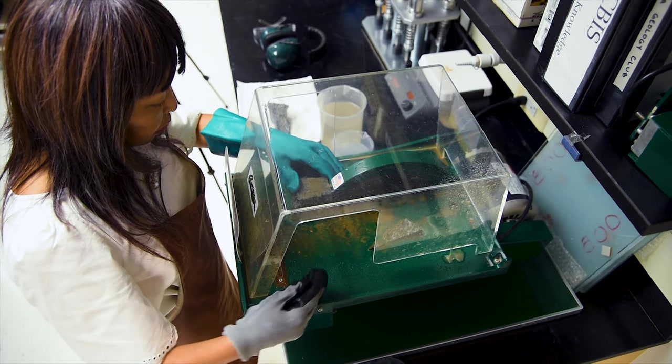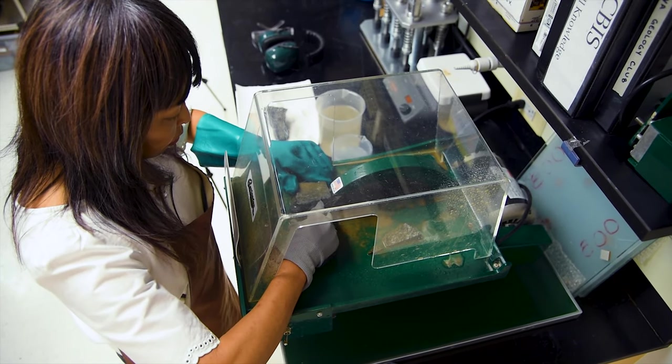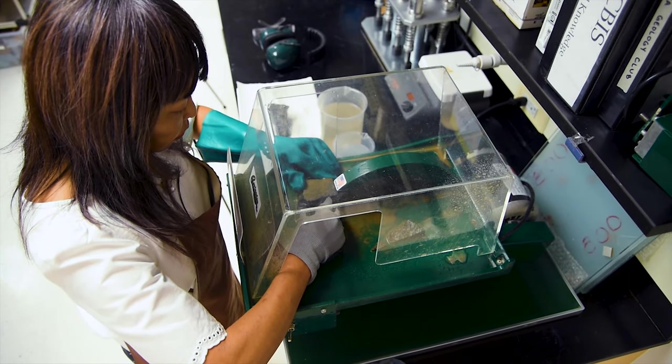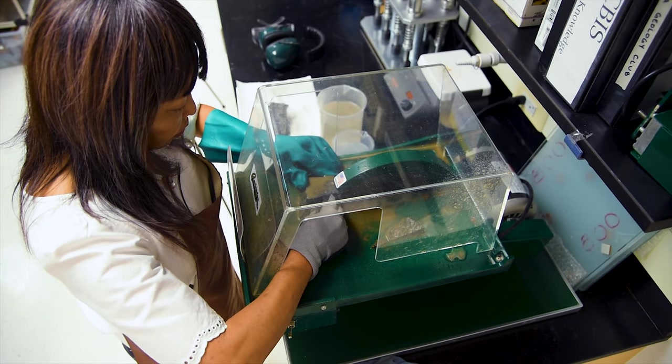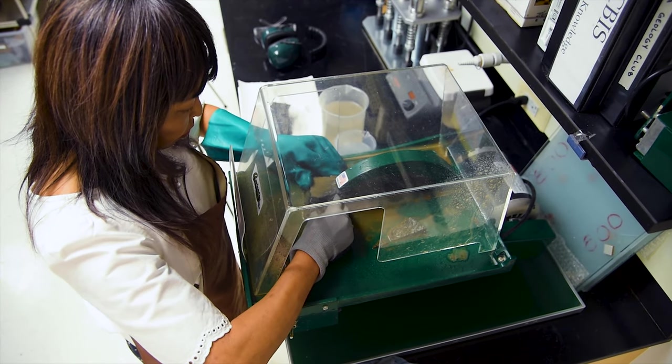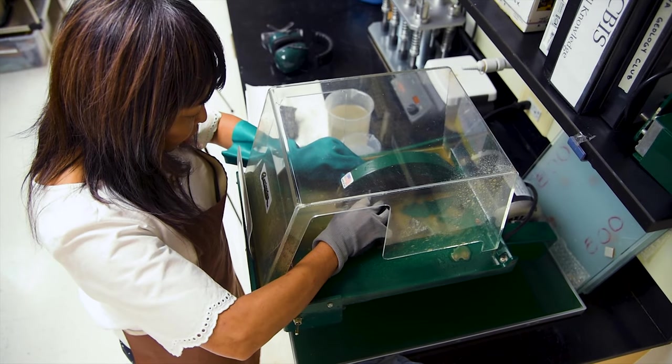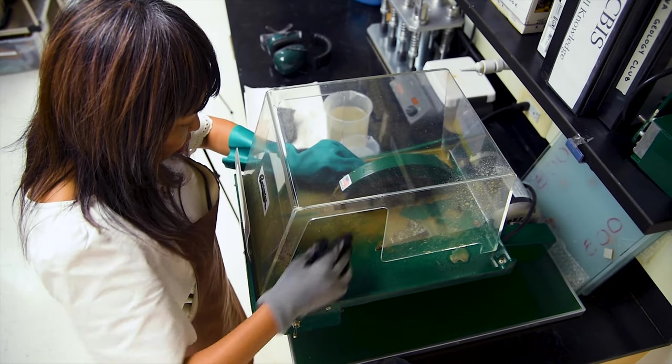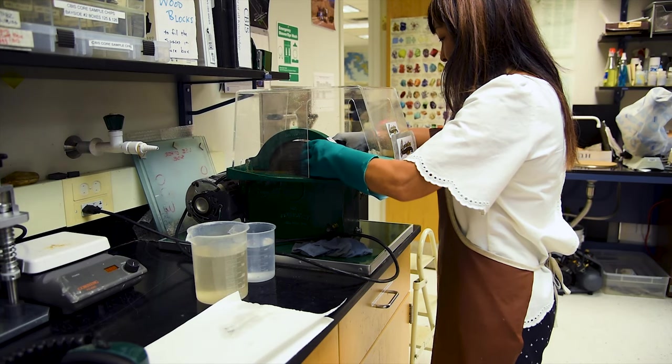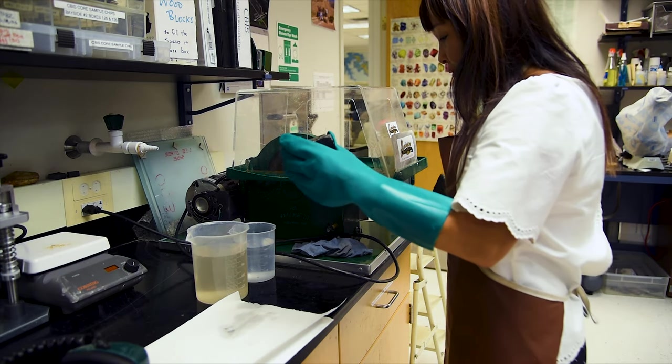Going back to the loaf of bread analogy, Sarah will now cut off a slice from the sample that is around a half inch to inch thick. We also want to make these cuts as parallel to each other as possible. This will be important later when we mount our chips on the forcible for grinding and polishing, and also during the epoxying process.